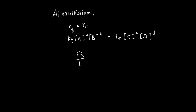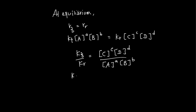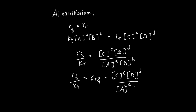Dividing both sides, Kf over Kr gives the equilibrium constant Kc. Therefore, Kc equals the concentration of C to the power of c times the concentration of D to the power of d, divided by the concentration of A to the power of a times the concentration of B to the power of b. This is the equilibrium constant formula.